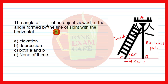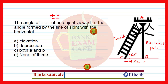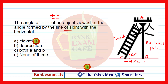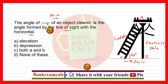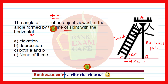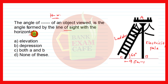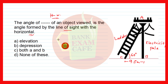Here is the fifth question for you — please give the answer through the comment box. The angle of blank of an object viewed is the angle formed by the line of sight with the horizontal. Is it the angle of depression, angle of elevation, both, or none of these? Please answer through the comment box. Friends, I hope you enjoyed this video. If yes, please like, share it with your friends, and do not forget to subscribe to the channel. Thank you very much for watching.